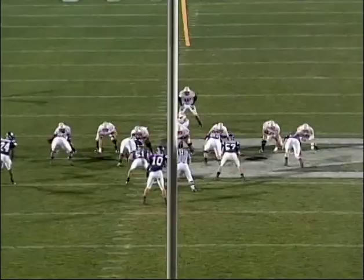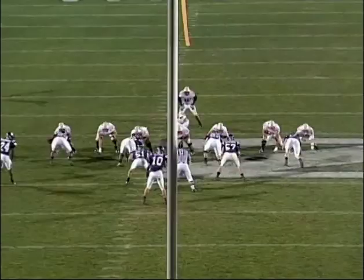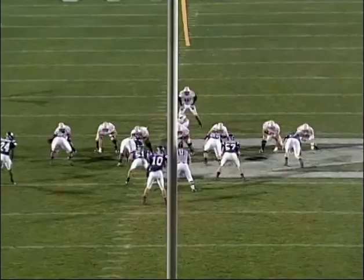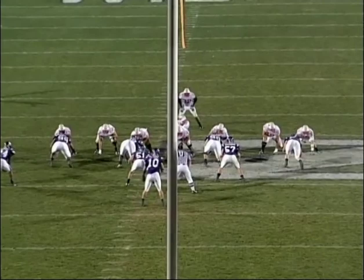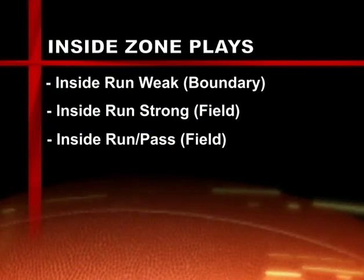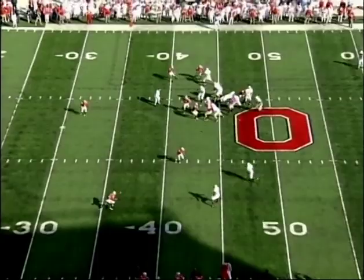Here's our inside zone scheme — a lot of you are familiar with it, just working the combination. These two work the defensive end and the Sam linebacker, the guard and tackle work the inside stack, the backside guard and tackle work the backside three technique and linebacker, and the backside tight end works the end, leaving the safety or cornerback on the backside. So we're attacking with an inside run strong and an inside run weak. Now there's an option many people are doing: when we call it, it's an inside run with the option to throw a quick bubble screen if you get an optimal look on the edge.